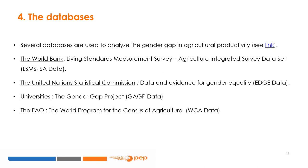Several databases are used to analyze the gender gap in agricultural productivity. We provide links to see them. We can use data from the World Bank's Living Standards Measurement Survey Agricultural Integrated Survey Dataset (LSMS-ISA), the United Nations Statistical Commission Data and Evidence for Gender Equality (EDGE) data, universities such as the Gender Gap Project (GAGP) data, and the FAO World Programme for the Census of Agriculture (WCA) data.